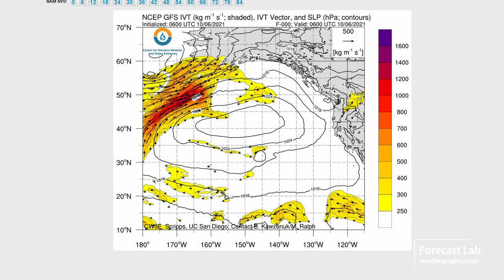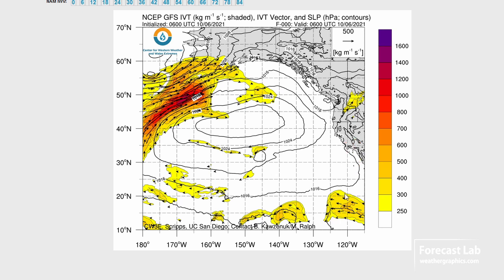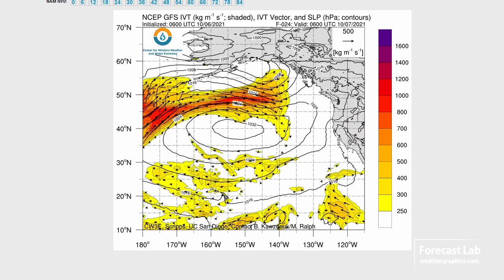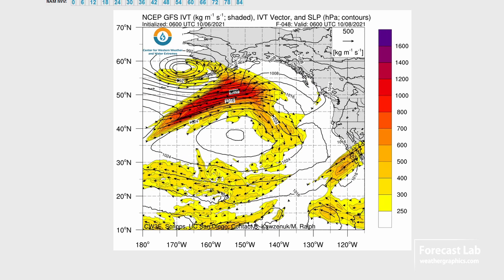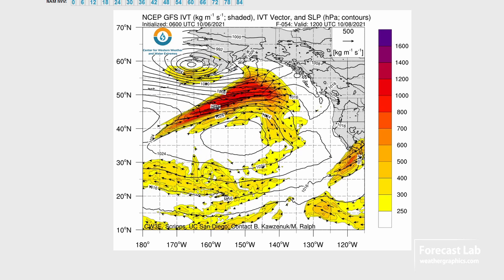UCSD has a very good IVT map — integrated vapor transport — which is what we use to measure the strength of atmospheric rivers. Values of about 250 are going to be weak; once we get up to 500 we're getting into the moderate range; 750 is strong, and then extreme values are up there. Looking at that region along the southern California coast, there's that river feeding right into the San Diego area, appearing to be about 500 with maybe a few specks of 600 and 700 — so that's pretty strong for this time of year.